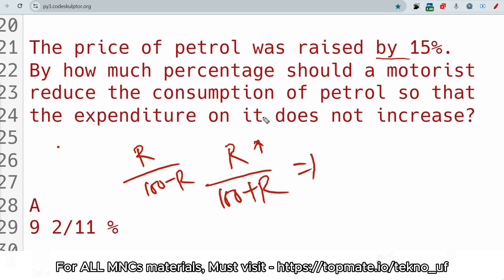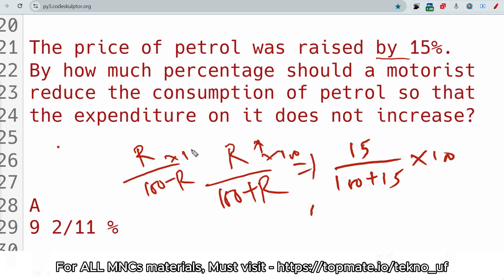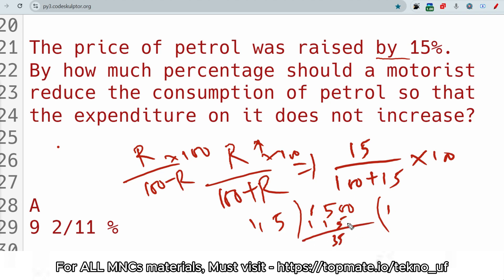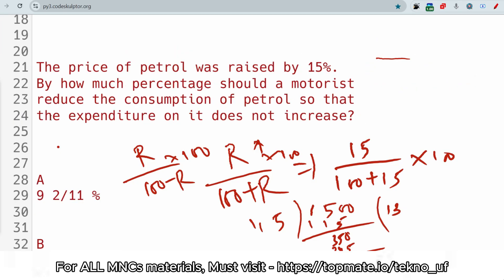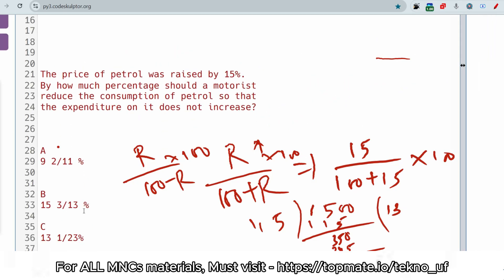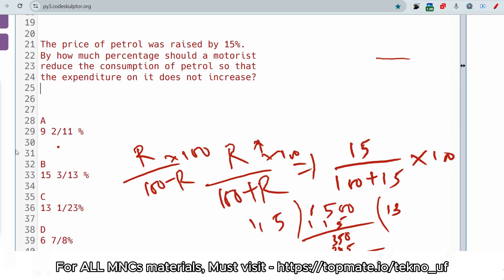Applying the formula with r = 15: 15/(100 + 15) = 1500/115. Simplifying, 115 × 13 = 1495, giving approximately 13.04%. As you can see in the options, no other option starts with 13, so you choose the option with 13 without completing the full calculation.